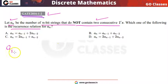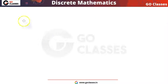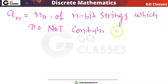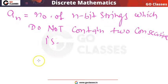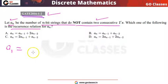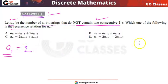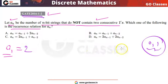What is A1? A1 means the number of one-length bit strings that do not contain two consecutive ones. You can notice both one-length strings — '0' and '1' — do not contain two consecutive ones. So A1 = 2.